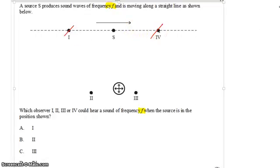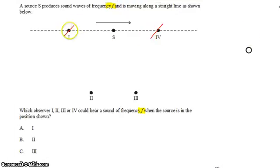Observer 4 is going to be experiencing a blue shift or a higher frequency shift, and observer 1 is going to be experiencing a red shift or a lower frequency shift. And that's going to be true until the source reaches observer 4.